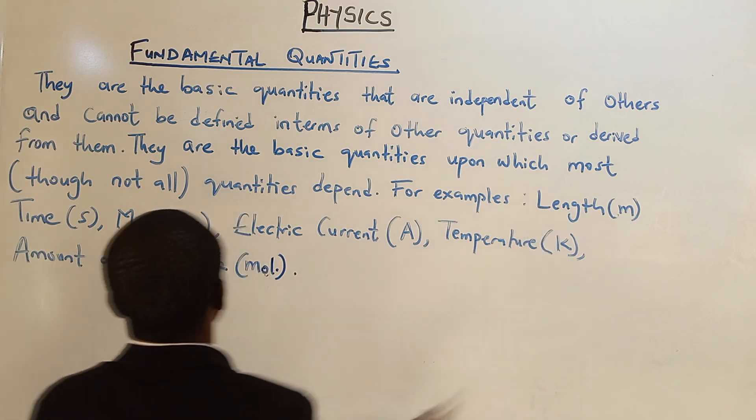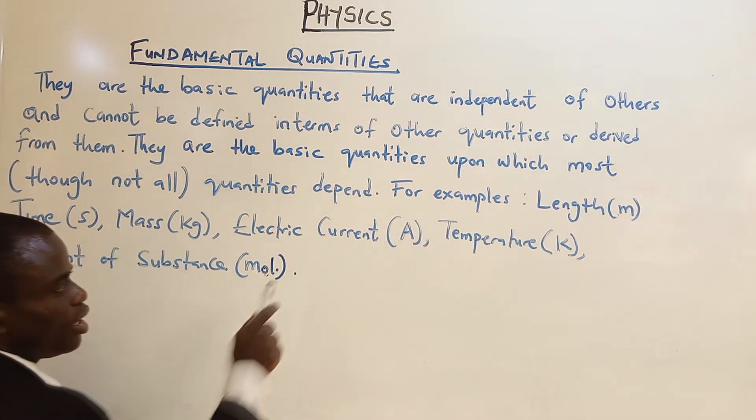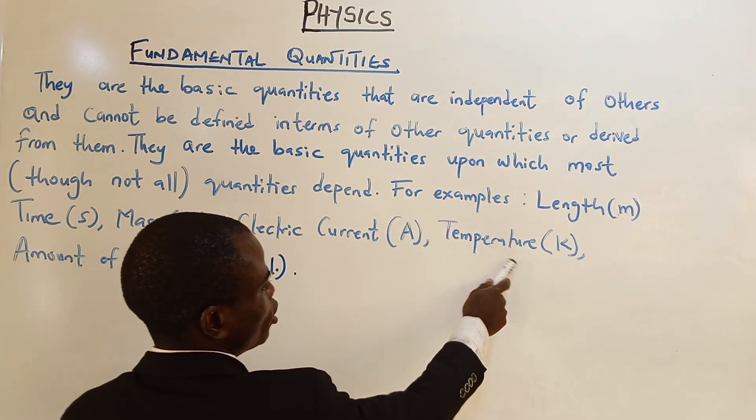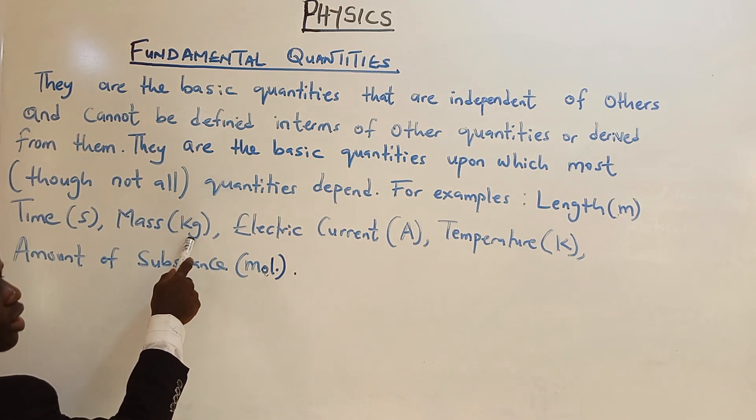length in meters, time in seconds, mass in kilograms, electric current in amperes, temperature in kelvin, amount of substance in mole. These are the unit abbreviations.